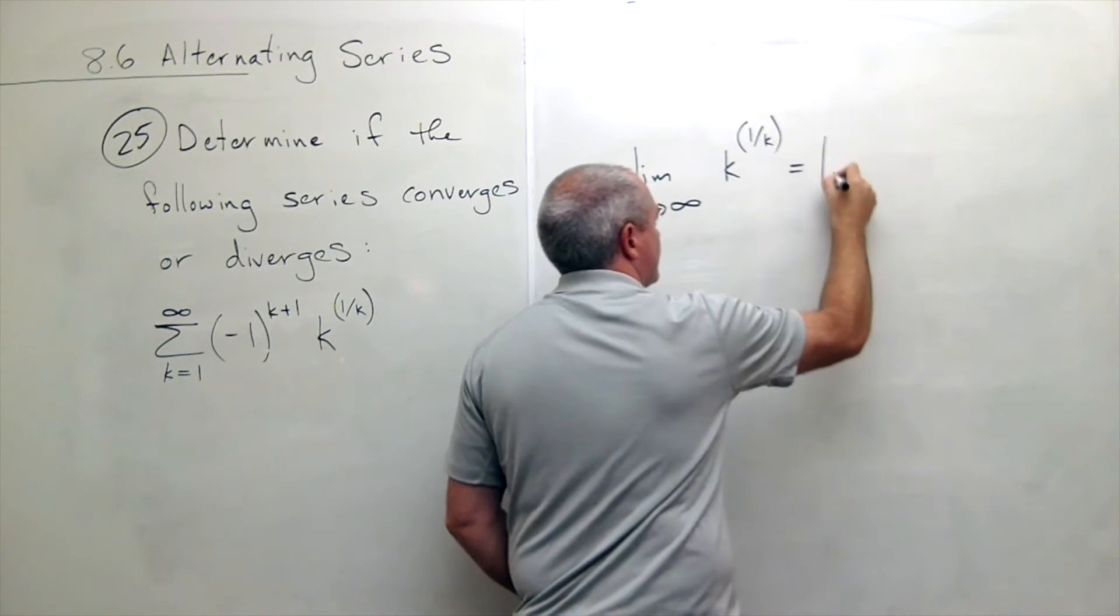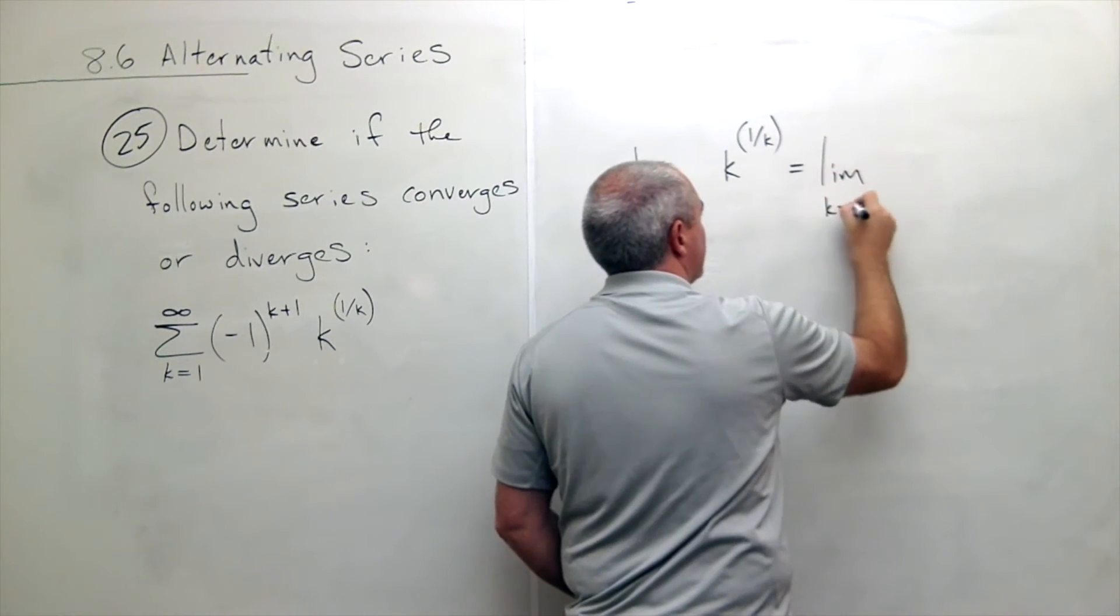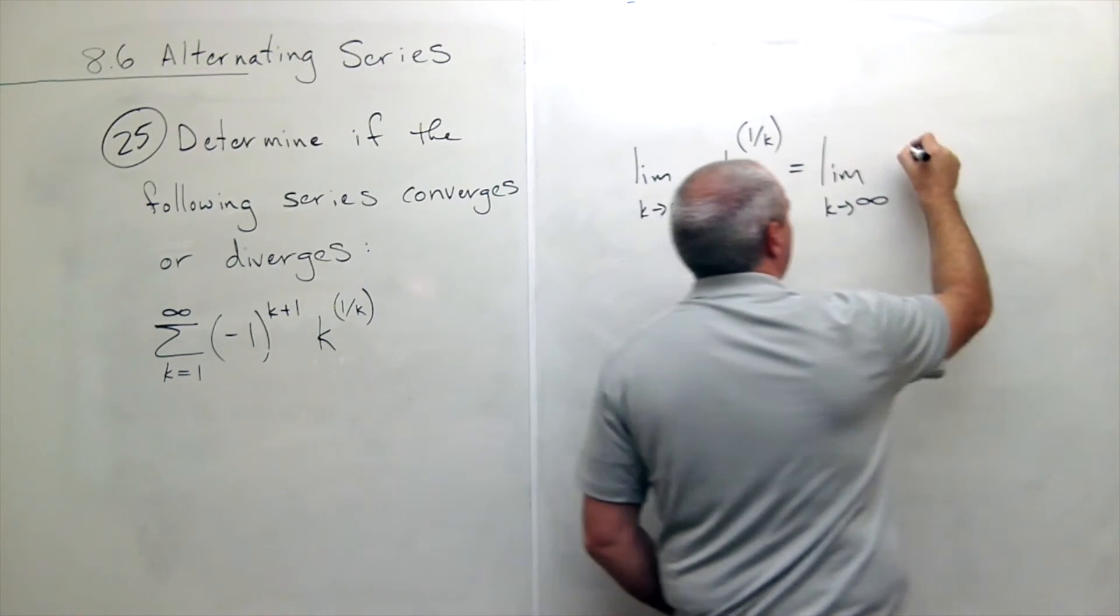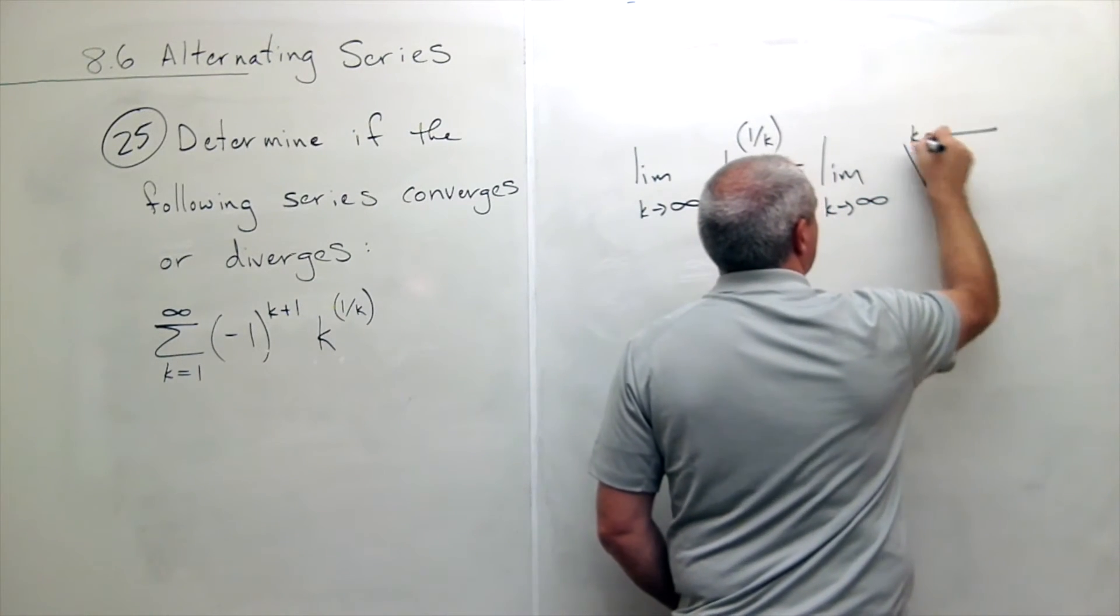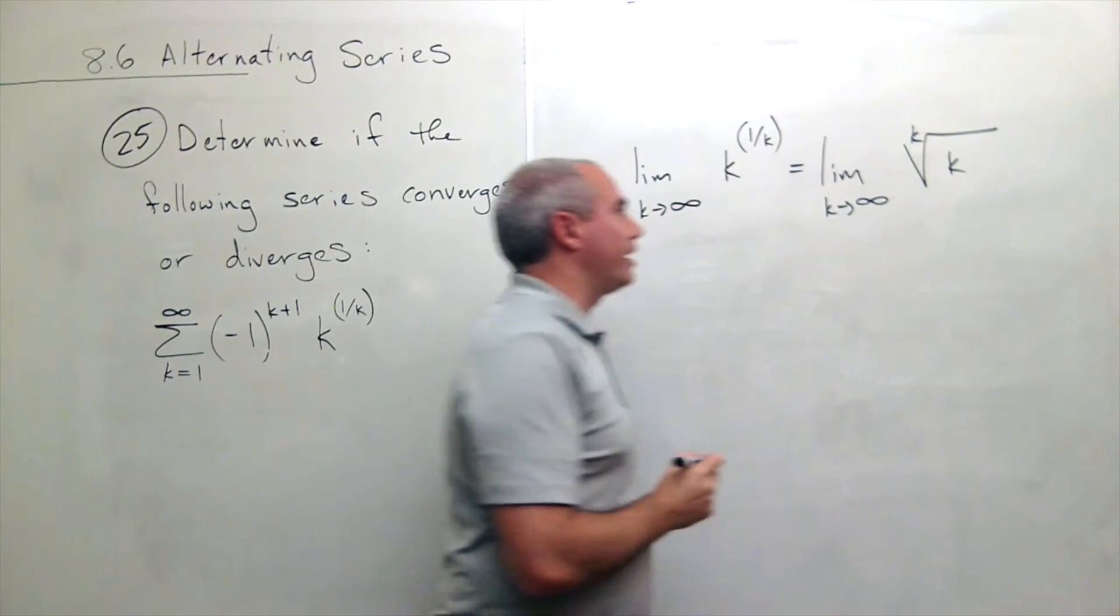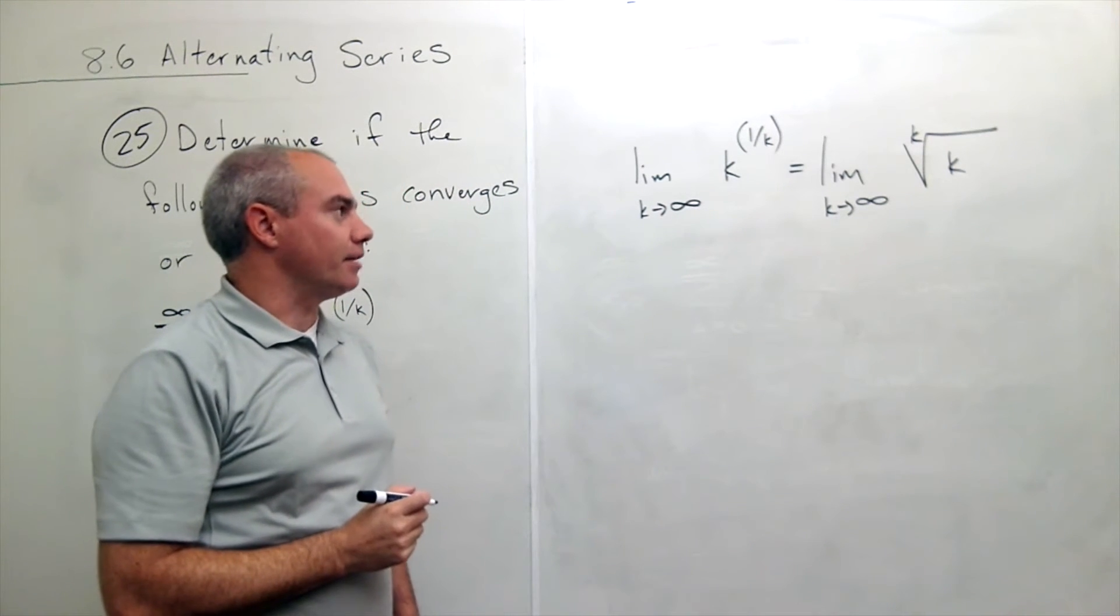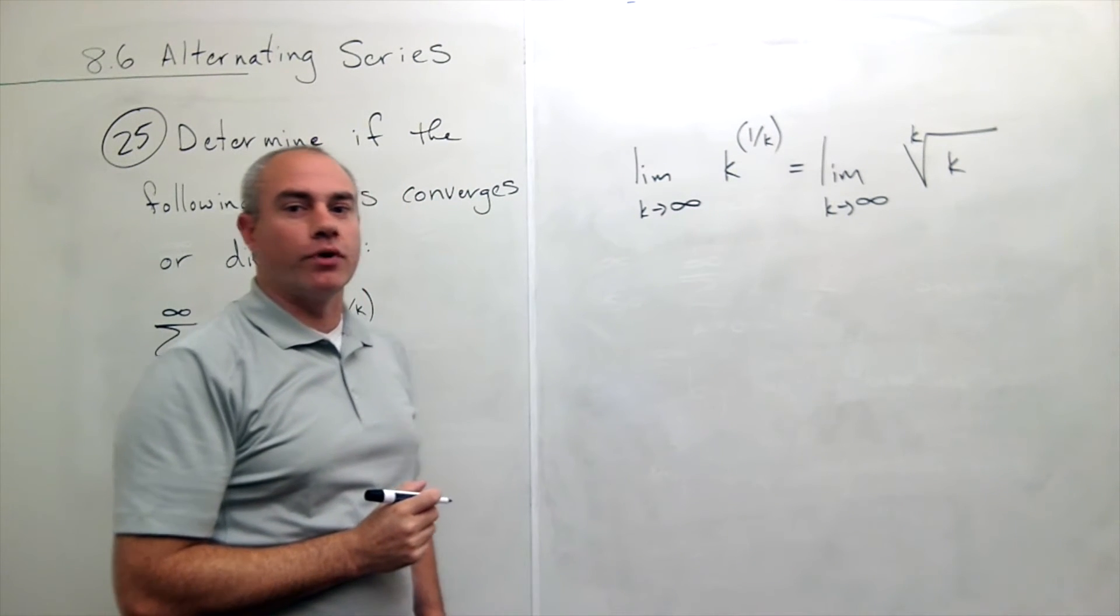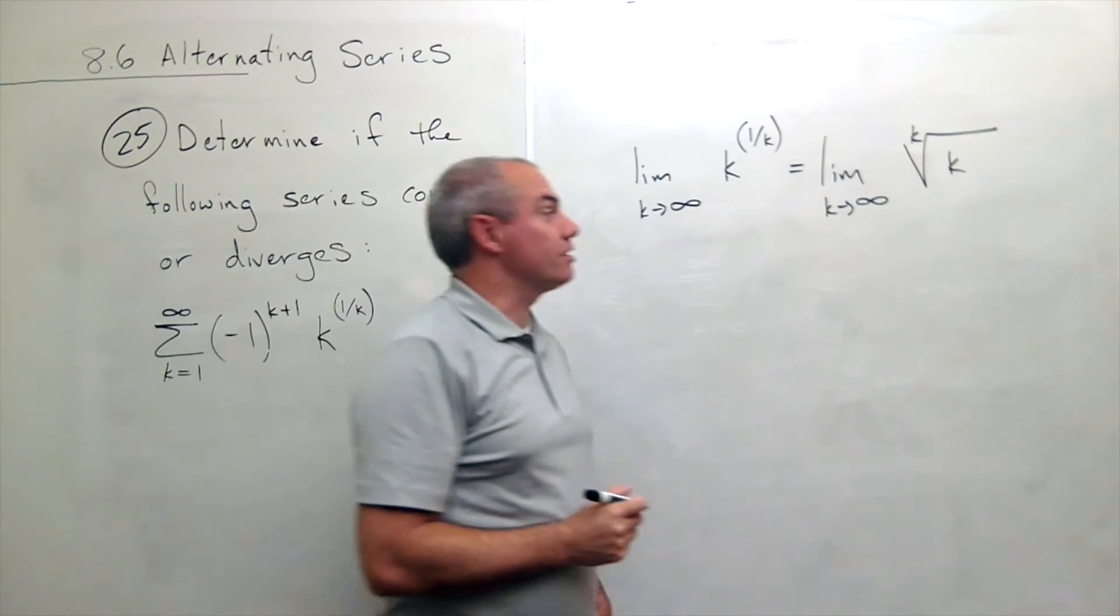Another way of writing that is that's the limit as k goes to infinity of the kth root of k. And we actually know that limit. We've worked with it before. That limit is 1.